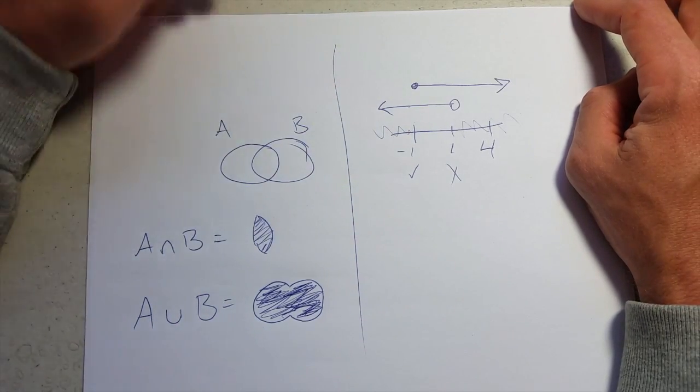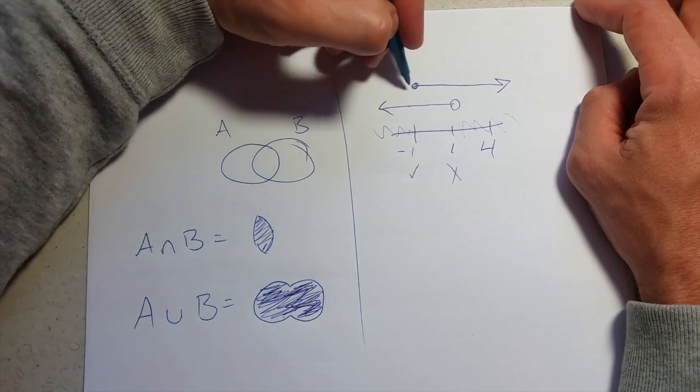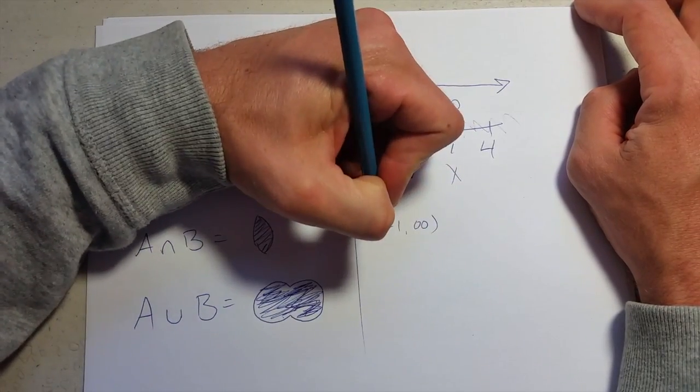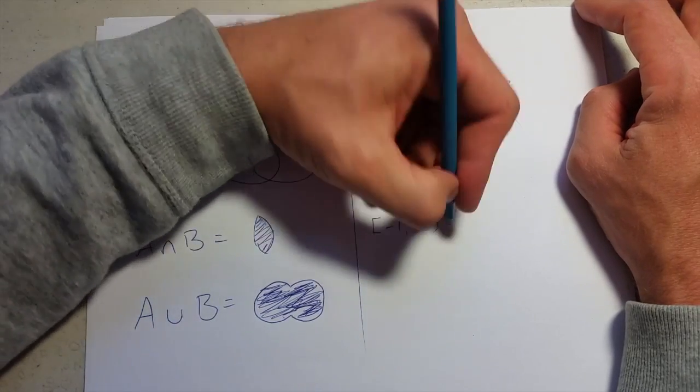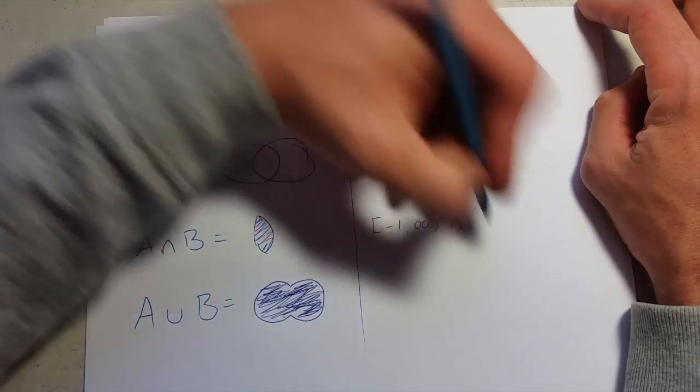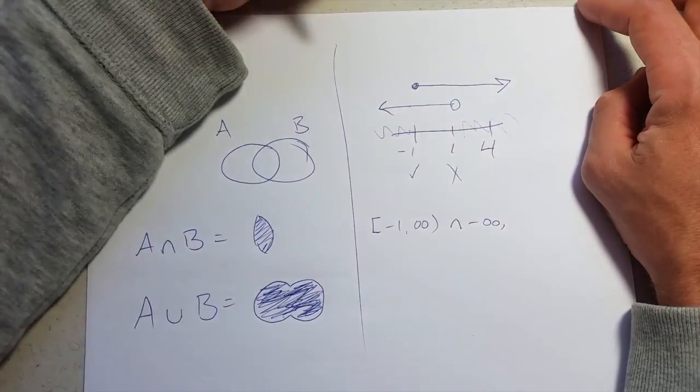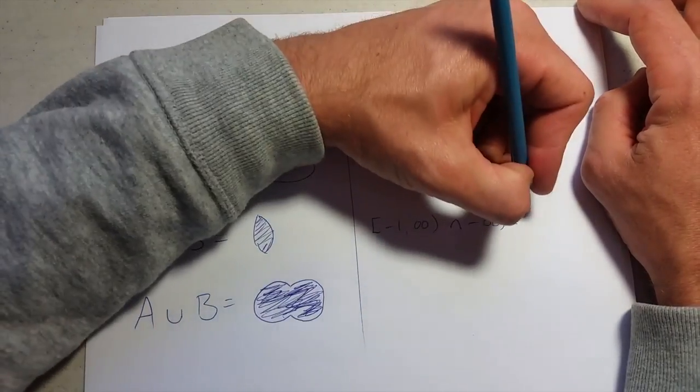So writing this in interval notation, this first set up here goes negative one to infinity, closed at negative one, intersect negative infinity comma positive one, and we're open.